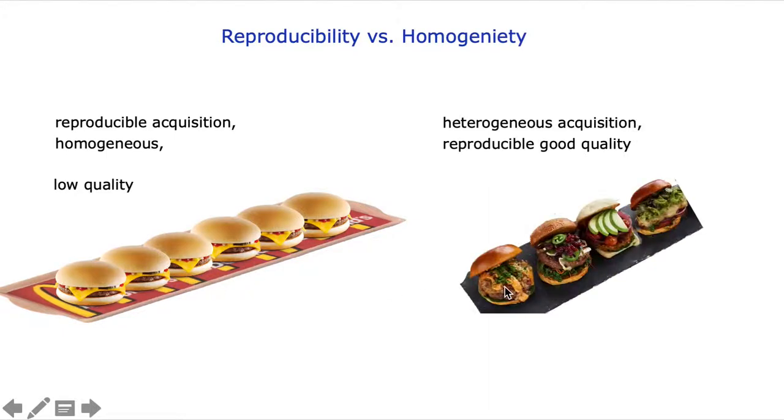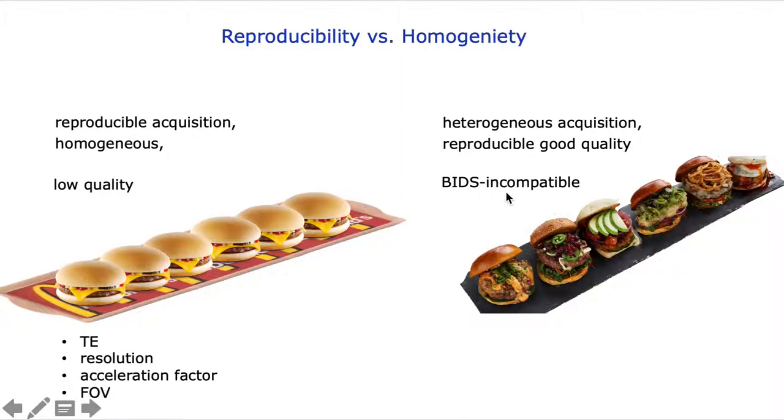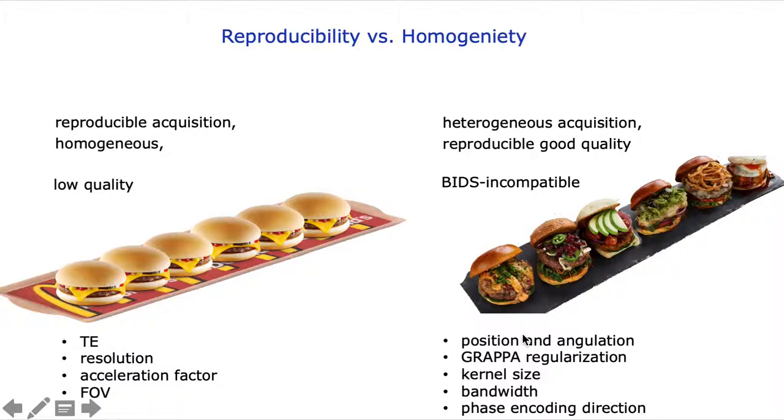However, manual adjustments of the acquisition on an individual basis makes the data maybe consistently better at the price of homogeneity, because now everything is done a bit different. It also means we needed to deal with issues of BIDS incompatibility. We ended up leaving some critical parameters like echo time and resolution untouched, whereas adjusting the bandwidth and actually most of the reconstruction parameters on an individual participant level to deal with these aforementioned artifacts.